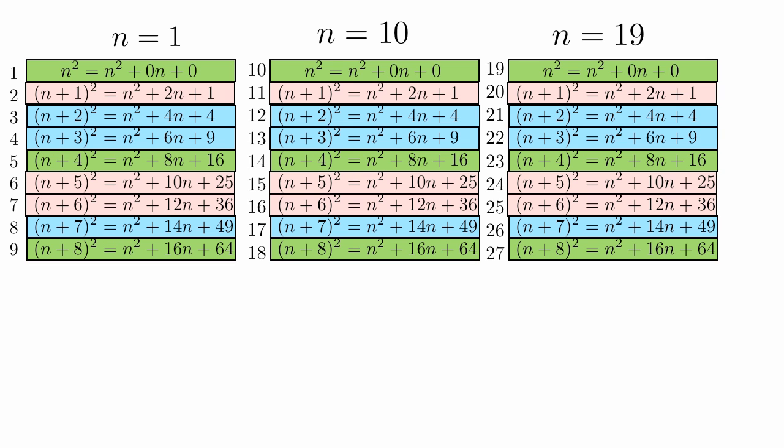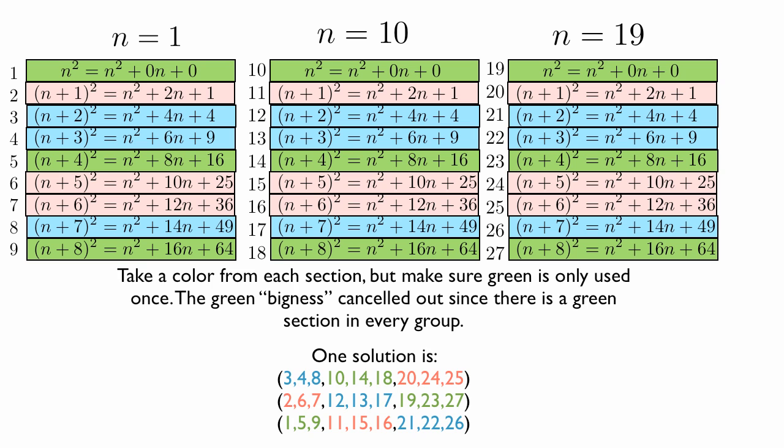And as long as we pick one color from each group, and as long as we also make sure to include the green group only once in each grouping, then we're able to find a solution. So this is the method in which we can generate a solution. Take a color from each section, but make sure that green is only used once. It doesn't matter if you repeat for blue and red, because they're the same. But make sure that green is only used once in each section. Therefore, that green is bigger really won't make a difference, because each group that we make is going to be bigger by 18.